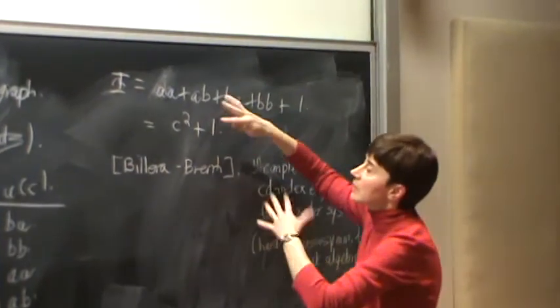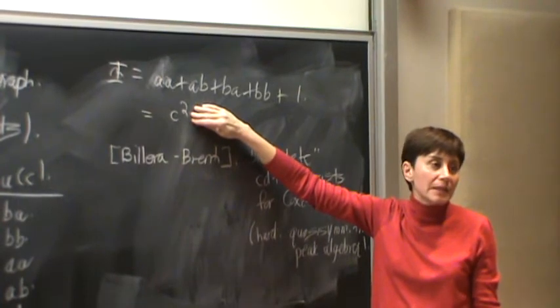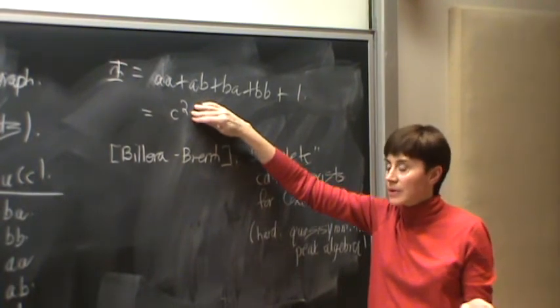So again, I'm using baby examples. This top degree thing, they were like, why are we getting the usual CD index? You know, why is that happening with these polynomials? They didn't understand it.